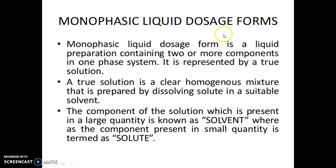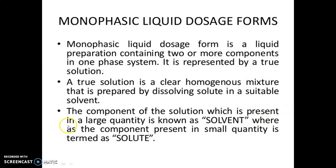A monophasic liquid dosage form is a liquid preparation containing two or more components in one phase system. It is represented by a true solution. A true solution is a clear homogenous mixture that is prepared by dissolving solute in a suitable solvent. The component of the solution which is present in a large quantity is known as solvent.